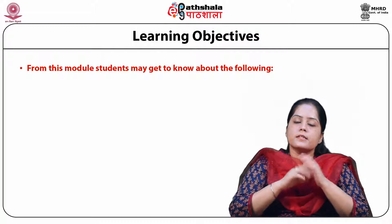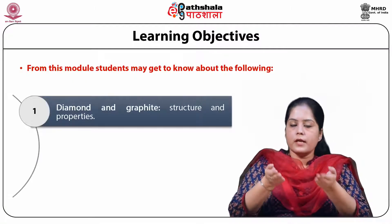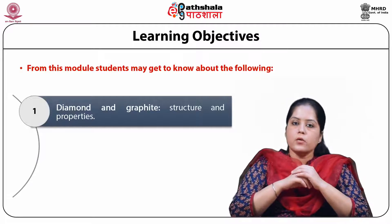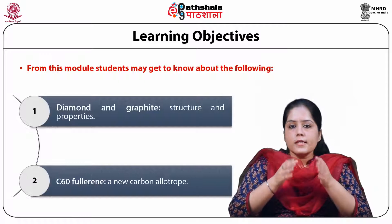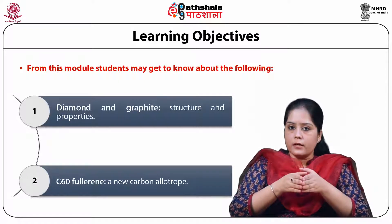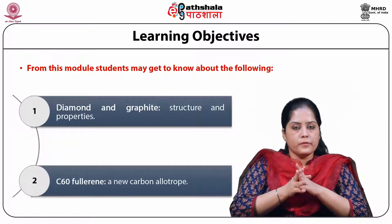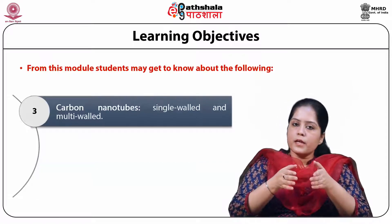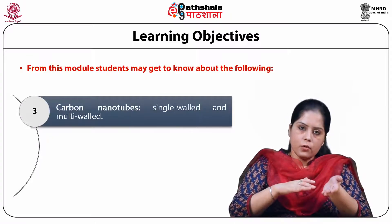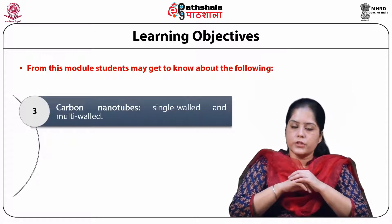First, the diamond and graphite — their structure and properties will be discussed. Second, the C60 fullerene, which is a new carbon allotrope, will be discussed. Thirdly, the carbon nanotubes — we will discuss both the single-walled and the multi-walled carbon nanotubes.